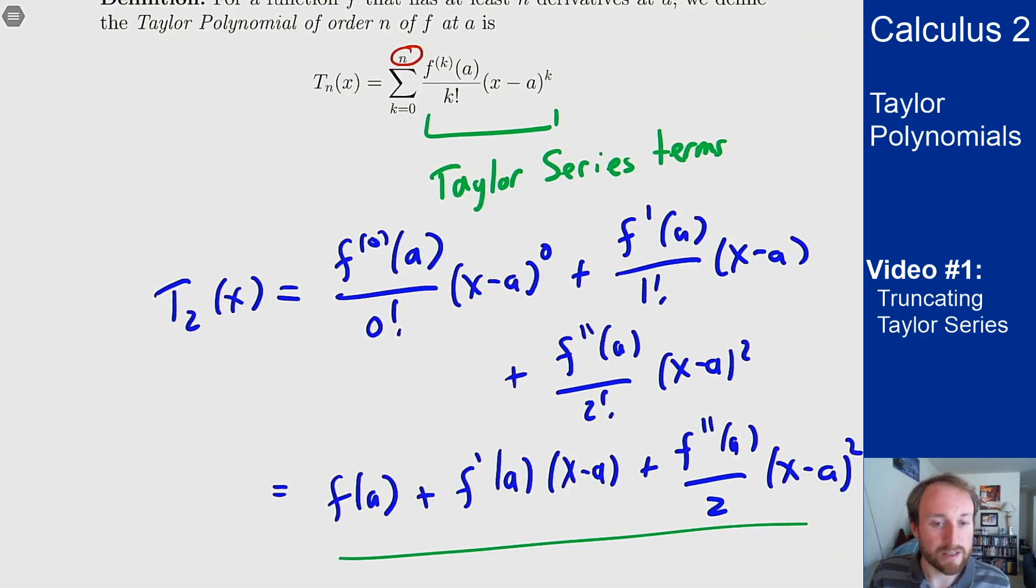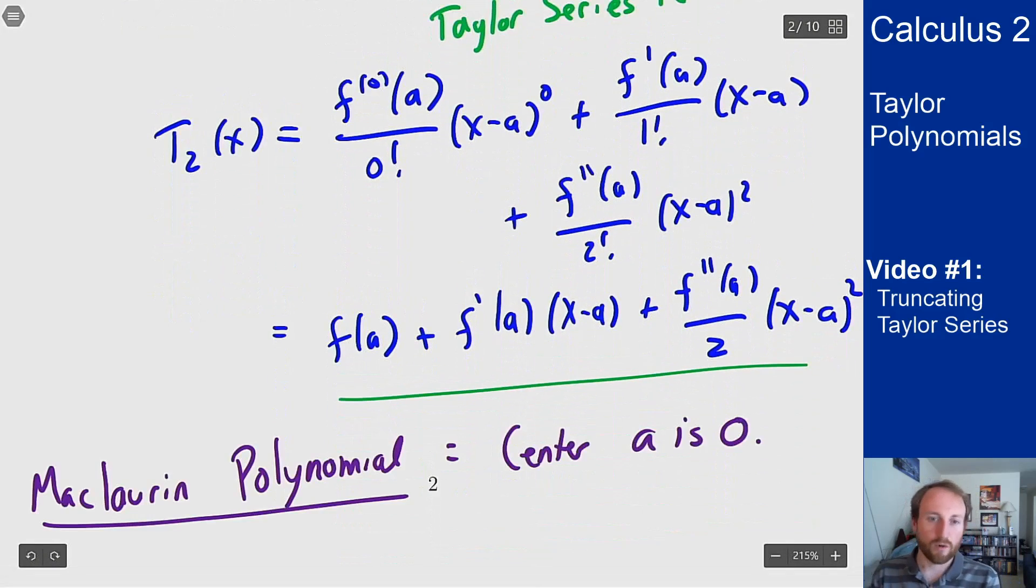Similar to Taylor series, we also have Maclaurin polynomials. We had Taylor series and Maclaurin series; now we have Taylor polynomials and Maclaurin polynomials. That just means the center a is zero, like before.